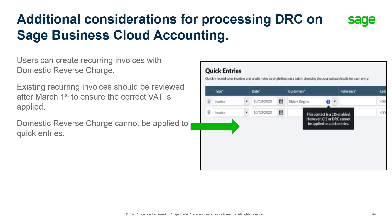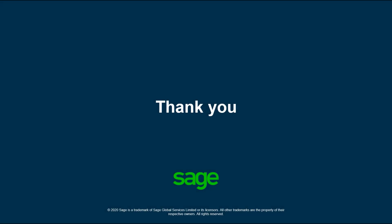Finally, just a couple of additional considerations when processing domestic reverse charge on Sage Business Cloud Accounting. Users can create recurring invoices with domestic reverse charge applied, and it will be important to review any existing recurring invoices after March the 1st to ensure the correct VAT is being applied. For further help, please access help within Sage Business Cloud Accounting or visit our website at sage.co.uk/help. That brings us to the end of today's session — thank you very much for joining us. Take care and stay safe.